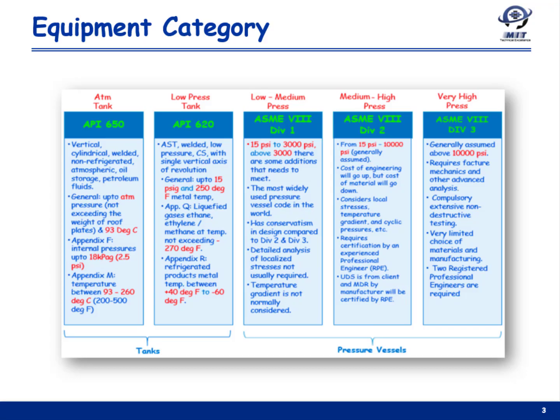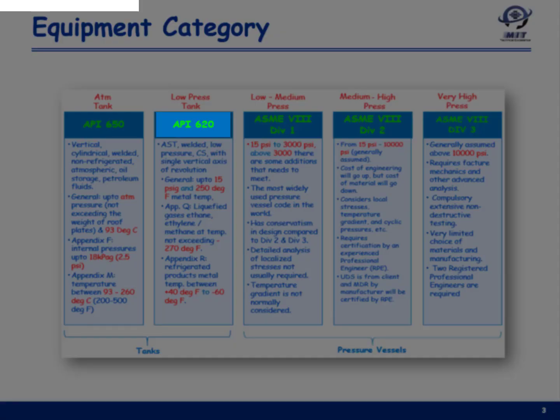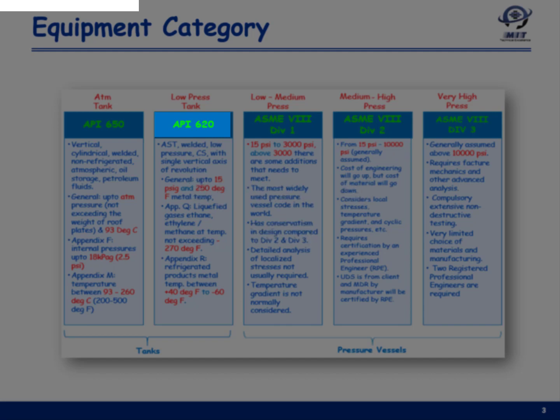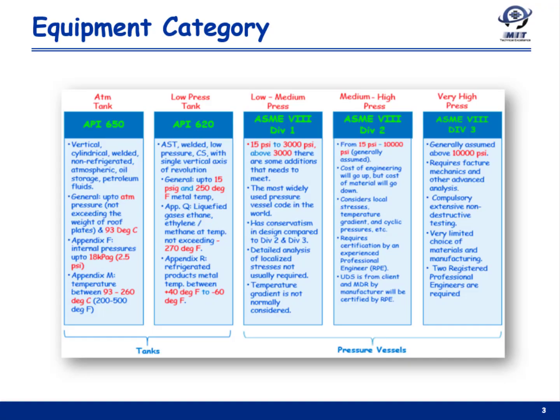Then comes API 620 standard, which allows a slightly higher pressure than API 650 — ranging from 2.5 psi up to 15 psi gauge. API 620 standards are specifically used in refrigerated service and liquefied gas services.